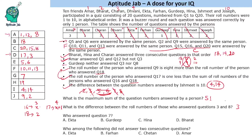Question 3 was answered by roll number 4 (Dhvani) and question 8 by roll number 1 (Amar), giving a difference of 3. Question number 7 was answered by Gurdeep.